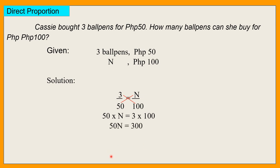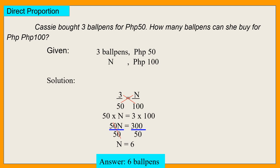So this is now 50N equals 300. Para mawala yung 50, divided by 50 — kung ano yung katabi ng N, yun yung i-divide natin. At kung ginawa sa kaliwa, gagawin sa kanan. Cancel na natin yung 50. N is equal to 6. So sagot natin dito is 6 ballpens kasi 100 pesos na.